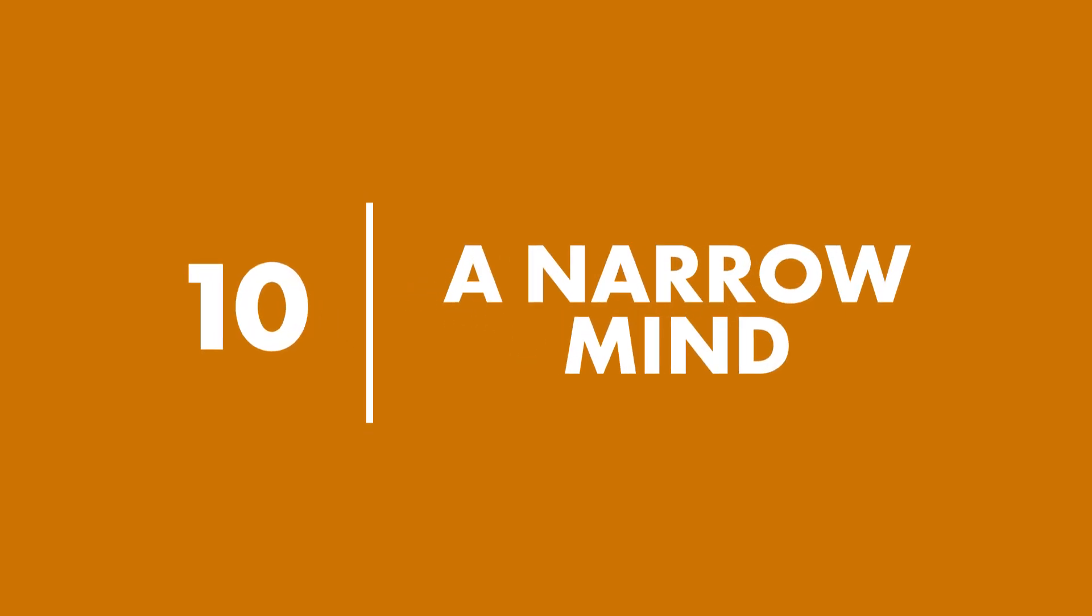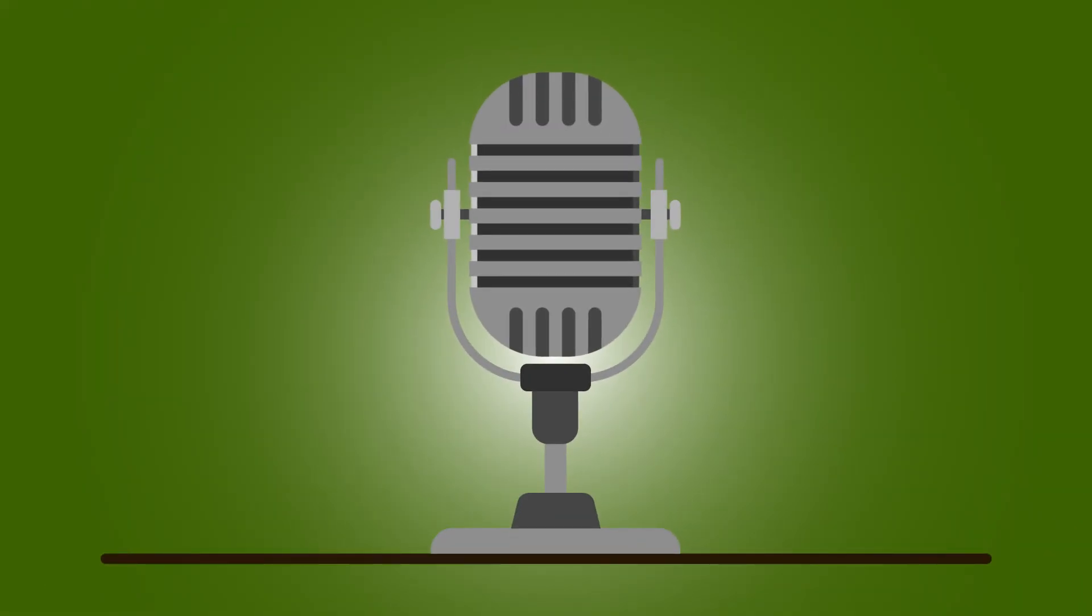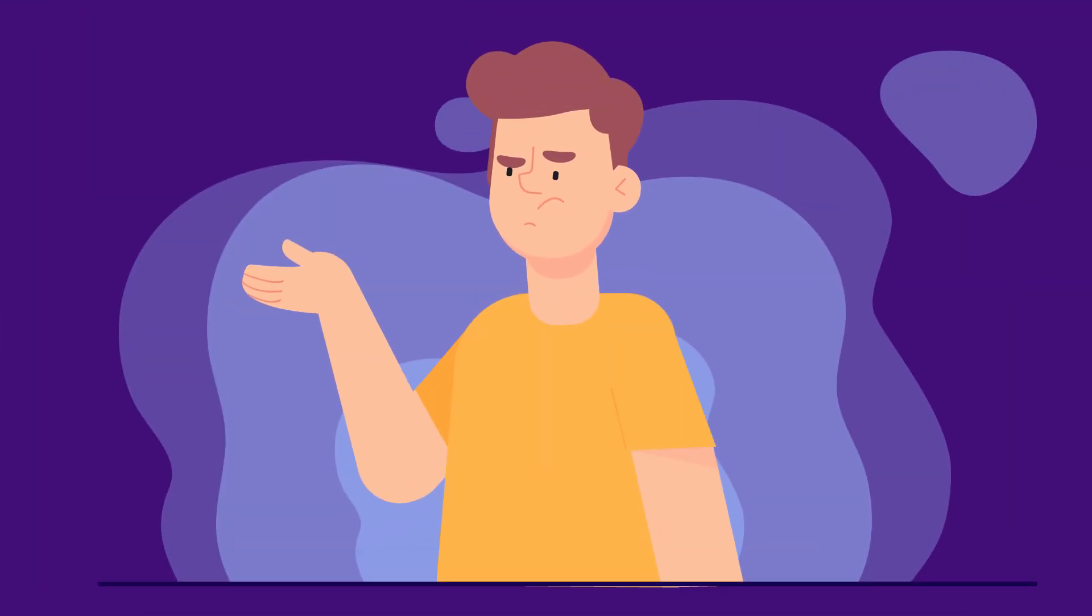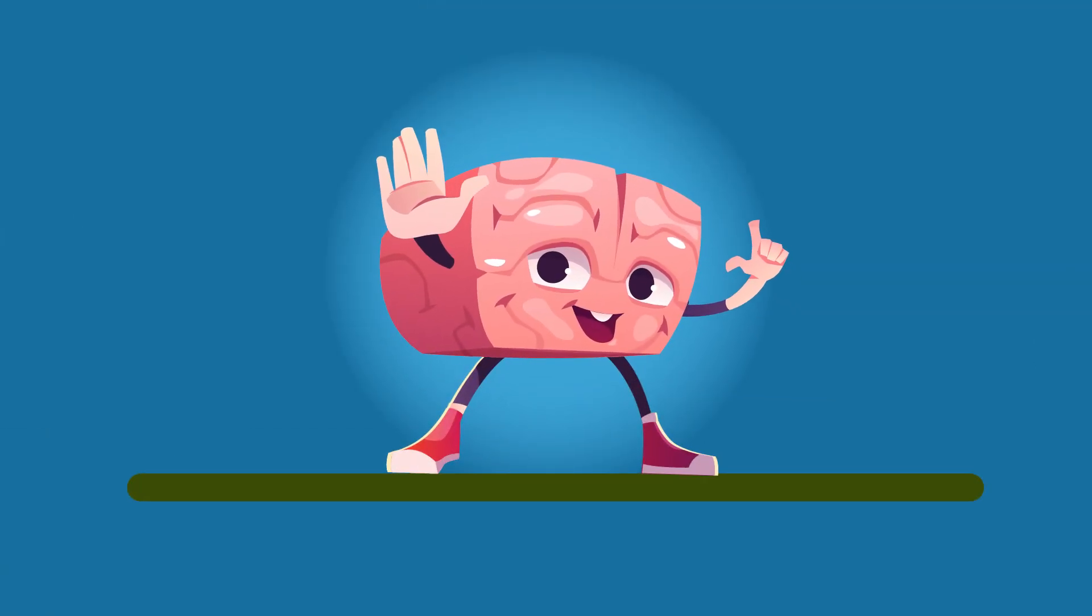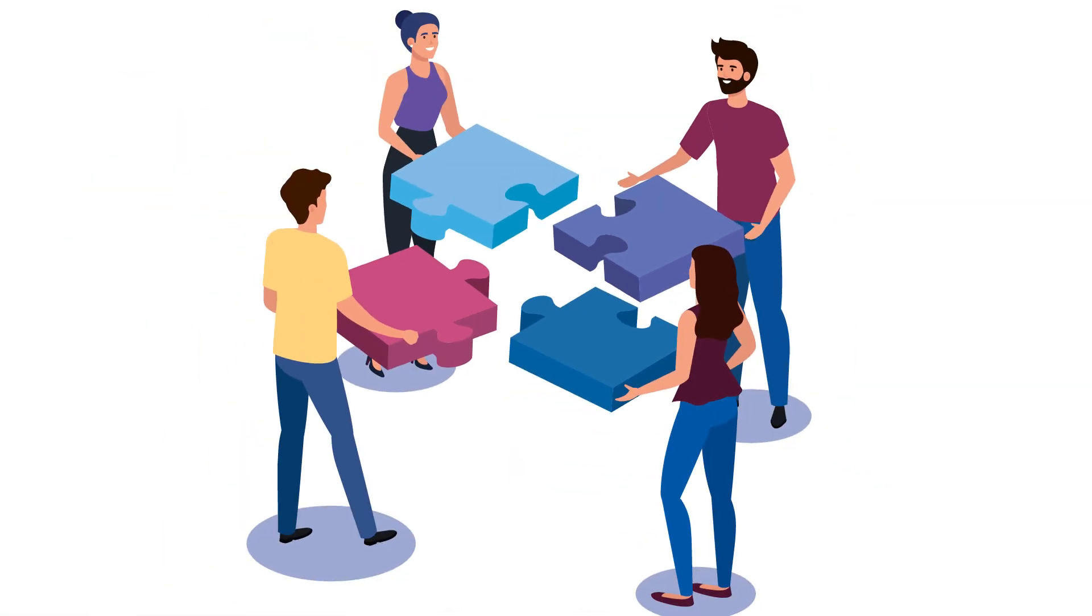Number 10: A Narrow Mind. Do you talk more than you listen? Unsuccessful people often ignore the wisdom of others. They think they know everything, and they refuse help from others. But the truth is, you need others to find success.